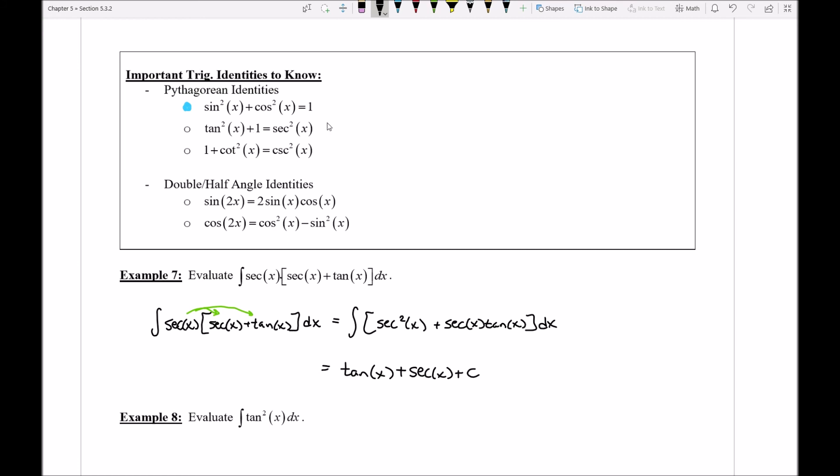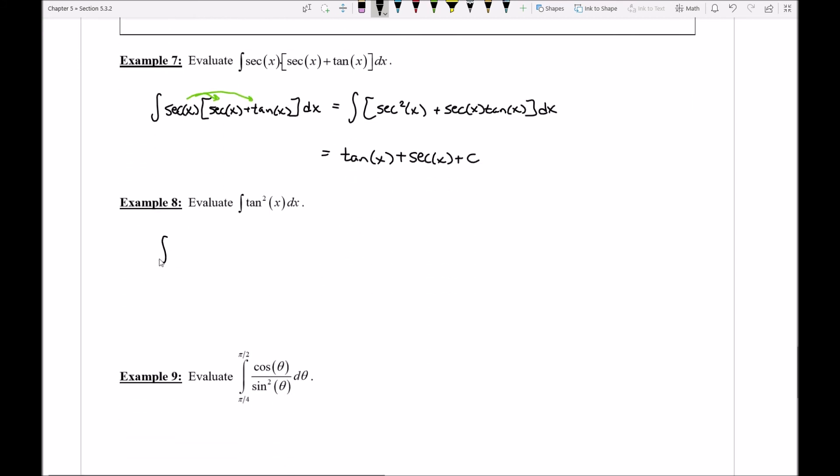Well if I just subtract one from both sides I could see that the tangent squared is going to be equal to the secant squared minus one. So I'm going to make use of that here.